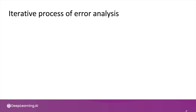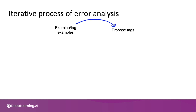You've heard me say that training a model is an iterative process, and deploying a model is an iterative process. Maybe it should come as no surprise that error analysis is also an iterative process. A typical process would be: you examine and tag some set of examples with an initial set of tags, such as car noise and people noise, and based on examining this initial set, you may come back and propose some new tags. With the new tags, you can then go back to examine and tag even more examples.